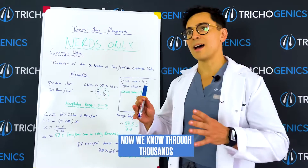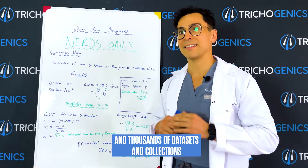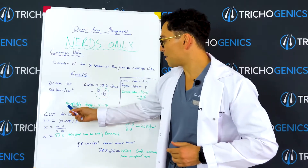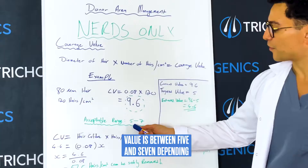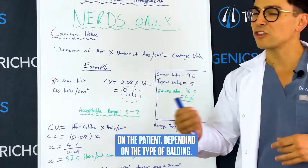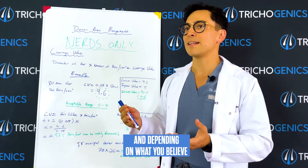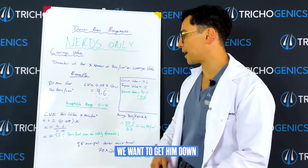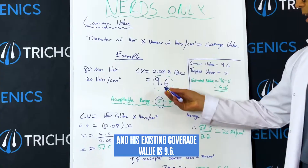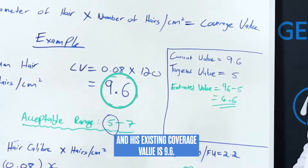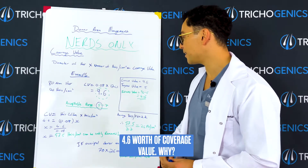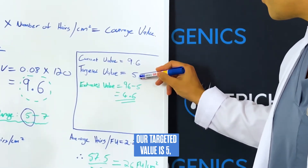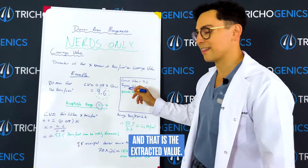We know through thousands and thousands of datasets and collections by some of the great guys in the world — FUE Institute — that the acceptable range for coverage value is between five and seven, depending on the patient, depending on the type of balding, and depending on what you believe the future will be for this patient. So let's say for this patient we want to get him down to a coverage value of 5, and his existing coverage value is 9.6. So we can remove 4.6 worth of coverage value — because the current value is 9.6, our targeted value is 5, and 9.6 minus 5 is 4.6. That is the extracted value.